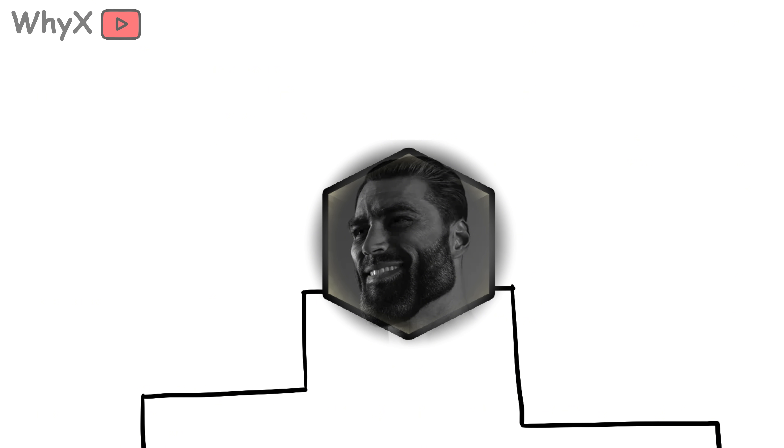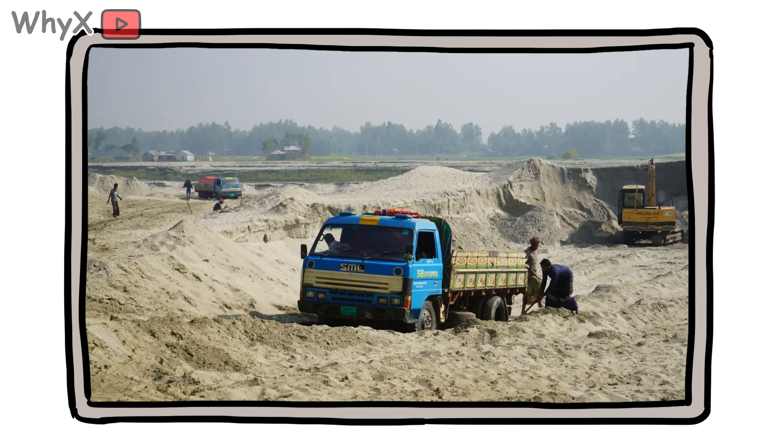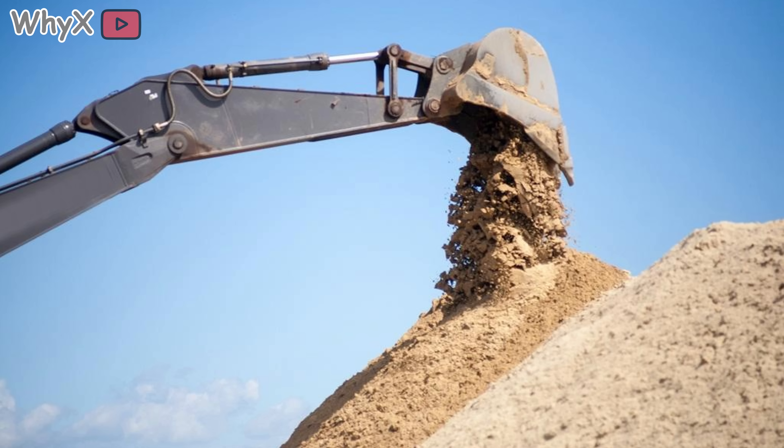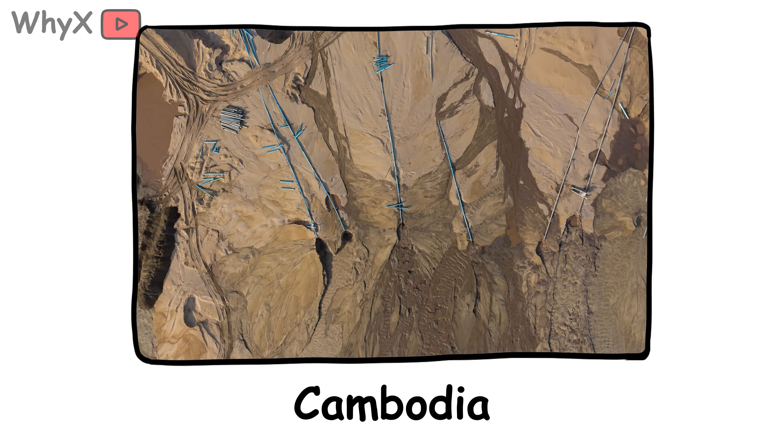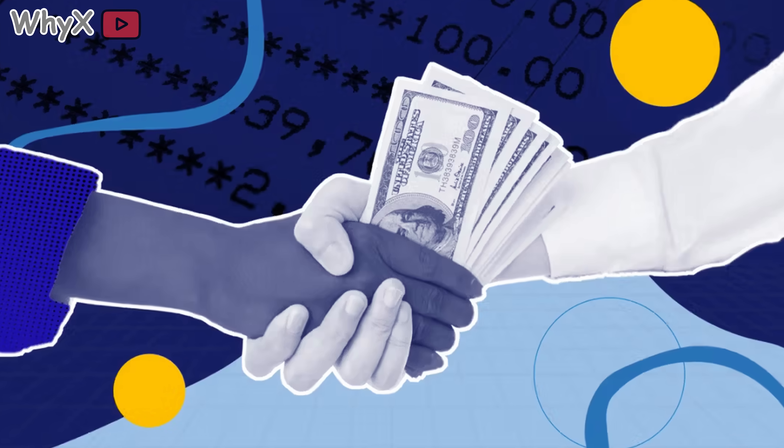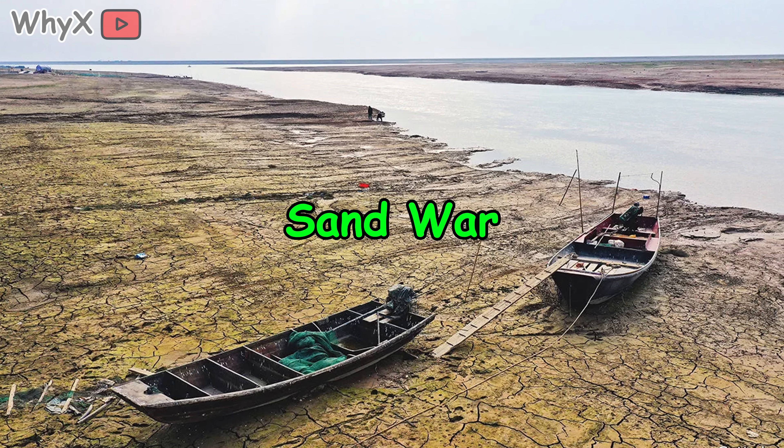As sand becomes more valuable, the fight for it has turned darker. Illegal sand mining has exploded in parts of Southeast Asia, Africa, and Latin America. Smugglers steal sand from protected beaches at night. They bribe local officials. They falsify records and export sand labeled as construction gravel. In Cambodia, entire islands have been stripped of sand and effectively vanished. In Morocco, over half the sand used for construction is estimated to come from illegal sources. This is not just about environmental harm. It is about corruption, exploitation, and violence. Some have even started calling it the sand wars.